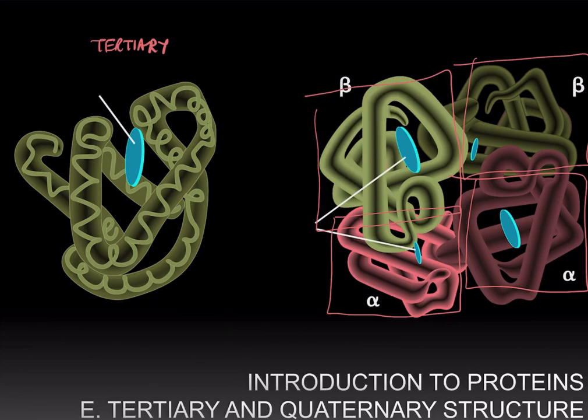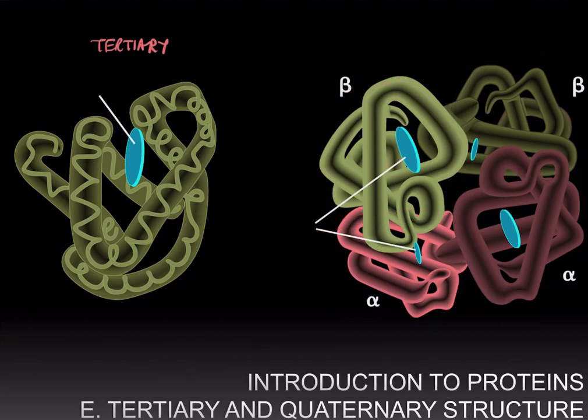Since there's two of the alphas, that's a dimer, and two of the betas, that's another dimer. And together, these four polypeptides come together and bind to each other to form the quaternary structure of hemoglobin.